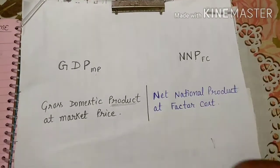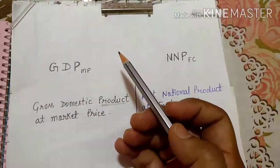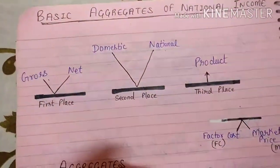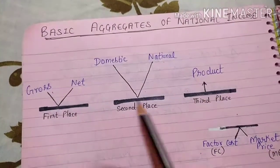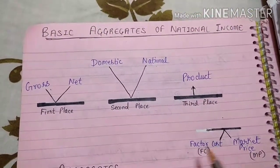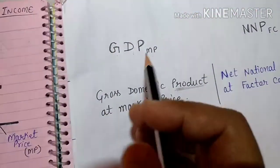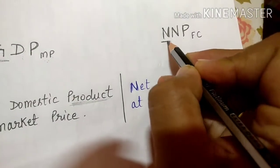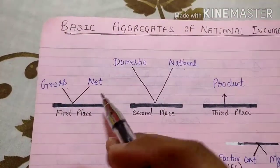A common question is: how do we know what comes in the first place, second place, and so on? There are three major places and one minor place for FC and MP. The first place is always for gross or net — as you can see, in GDP at MP the first place has 'G' for gross, and in NNP at FC the first place has 'N' for net.